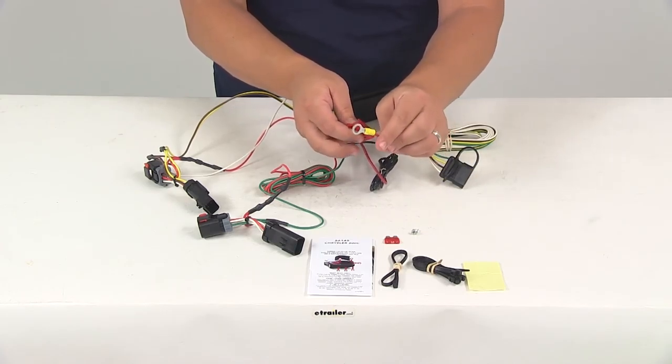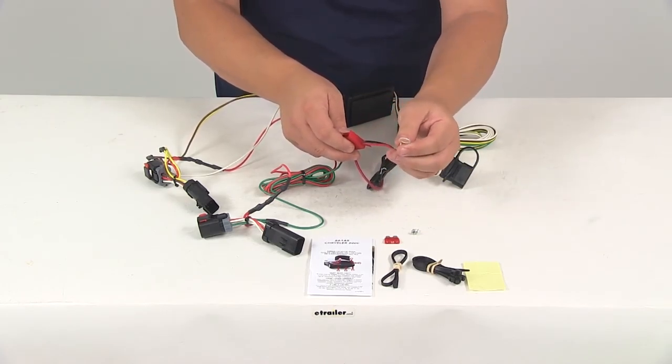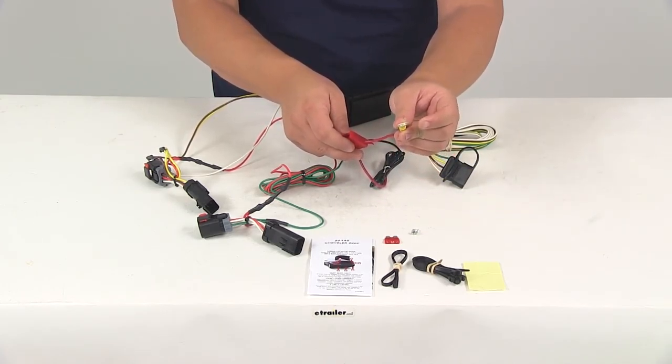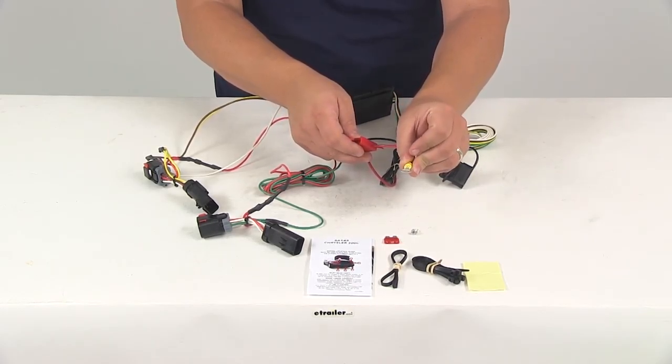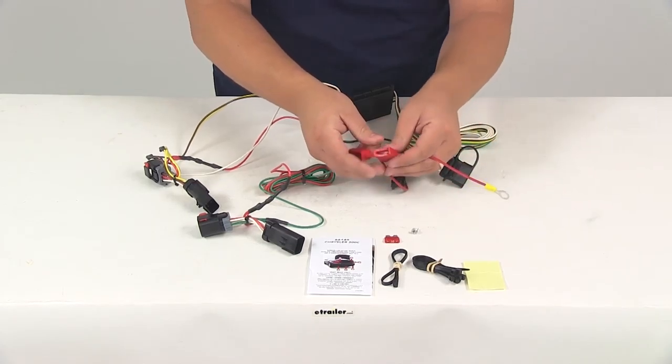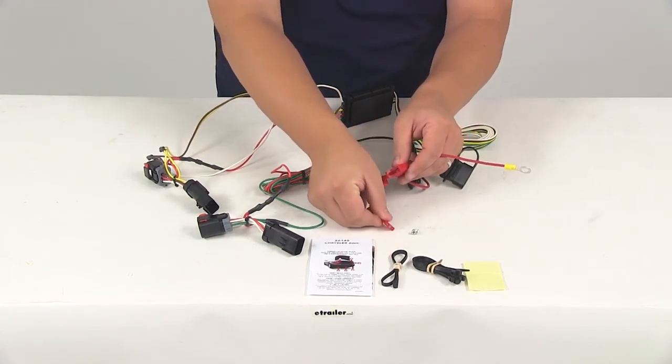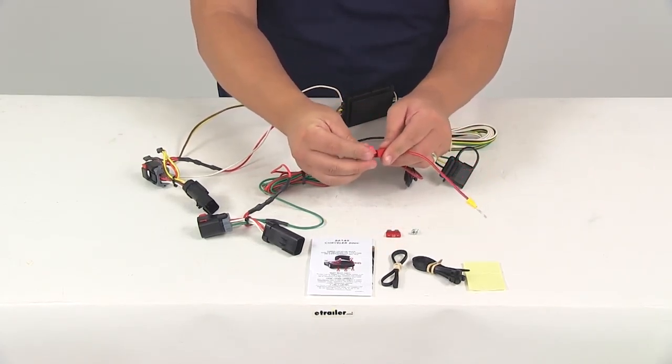So on the other end of the fuse holder you're going to have a ring terminal. This needs to get connected to the stud that has your red battery cable attached to it. Once you have that connected you just go ahead and install the included 10 amp fuse inside the fuse holder and close up the cap.